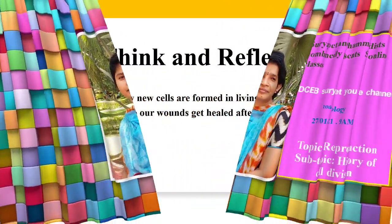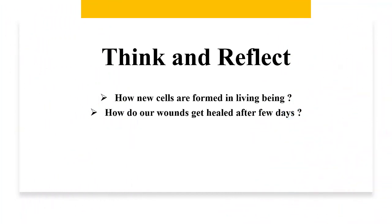First, answer these questions. How are new cells formed in living beings? What is the need for new cells in our body? Our body needs new cells because every day we are losing some cells. Every day a few cells are dying. For example, the lifespan of RBC is only 120 days. The lifespan of WBC is 13 to 20 days. Our skin cells, our intestine cells, all cells from different organs die, and new cells are produced in those organs in place of the dead cells.